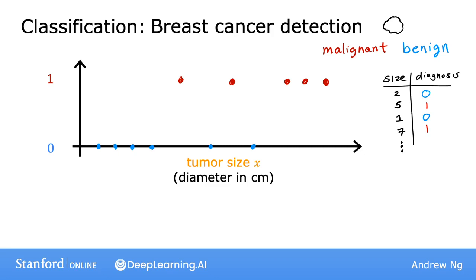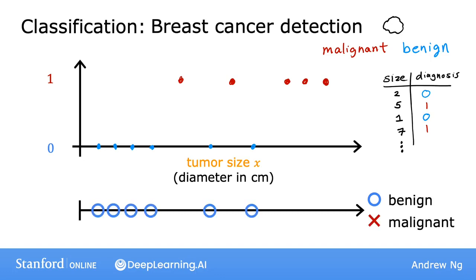Because there are only two possible outputs or two possible categories in this example, you can also plot this dataset on a line like this, where now I'm going to use two different symbols to denote the category, using a circle or an O to denote the benign examples and a cross to denote the malignant examples.